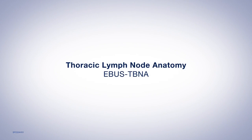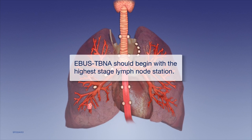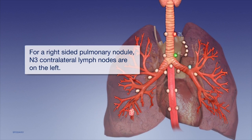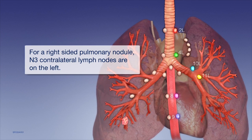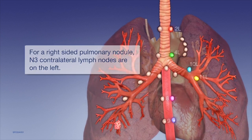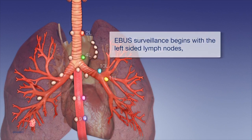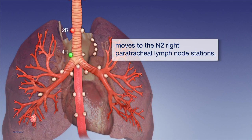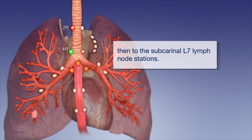Thoracic Lymph Node Anatomy as it pertains to EBUS TBNA. EBUS TBNA procedures should always begin with the highest stage lymph node station. For a right-sided pulmonary nodule, the contralateral lymph node stations would be on the left, representing N3 lymph nodes. EBUS surveillance would begin with the left-sided lymph nodes, and would then move to the N2 right paratracheal levels 2 and 4 and subcarinal level 7 lymph node stations.